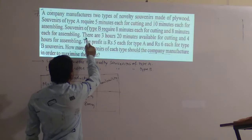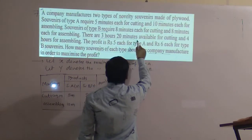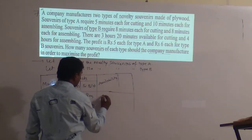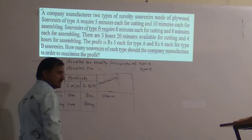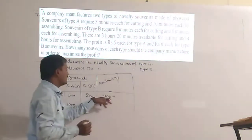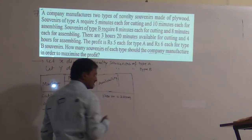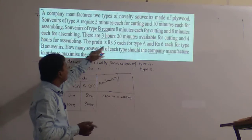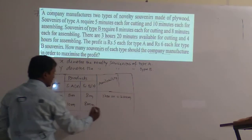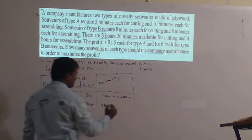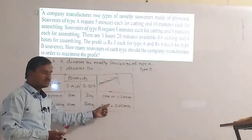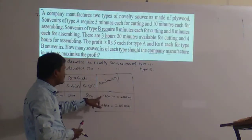For availability: cutting time is 3 hours 20 minutes = 3 × 60 + 20 = 200 minutes. Assembling time is 4 hours = 4 × 60 = 240 minutes. Since all times are given in minutes, we convert availability to minutes. The sign is less than or equal to, since the cutting time available is only 200 minutes — not more than this.